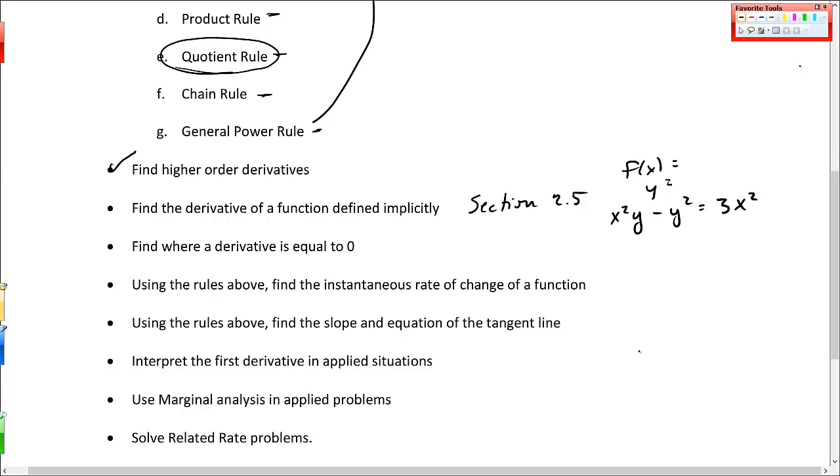The other, I think, kind of the rest of this might be interpretation. Let's look and make sure. Find where the derivative is equal to 0. You just take, find the derivative, f prime of x, and then you set it equal to 0, right, and solve for x. We did that at various points throughout this chapter, and it's a leading question into chapter 3.